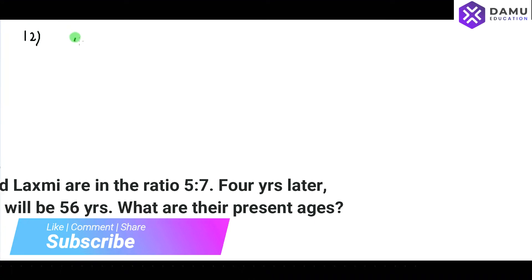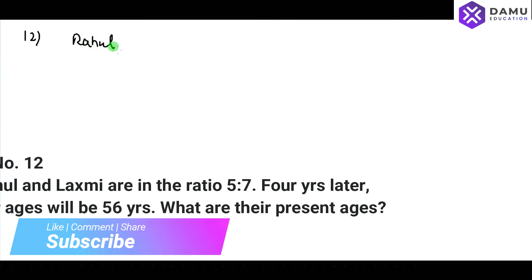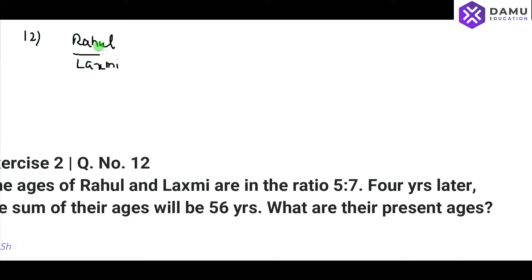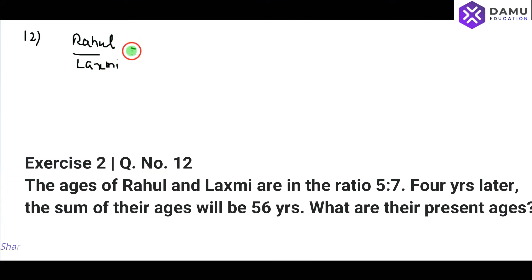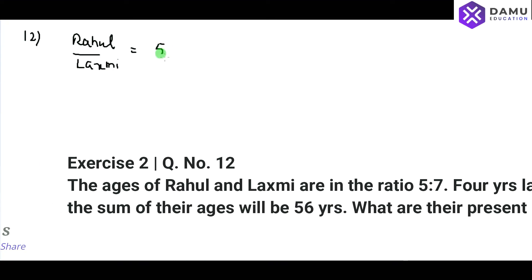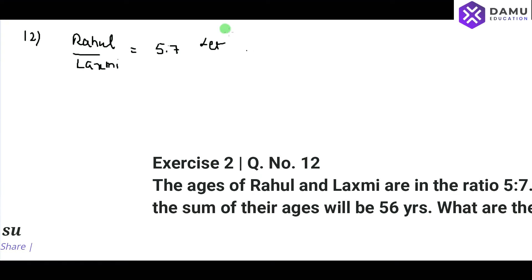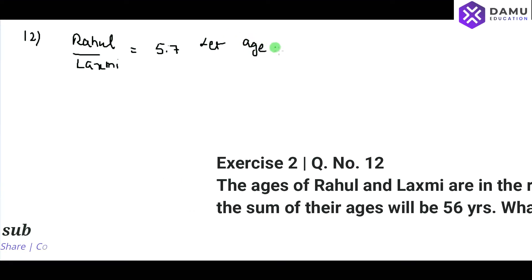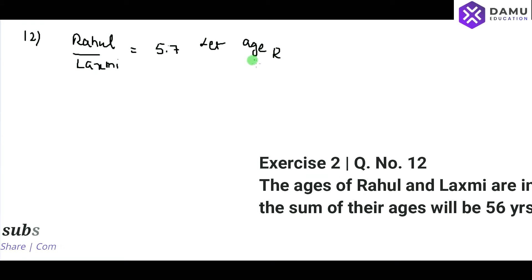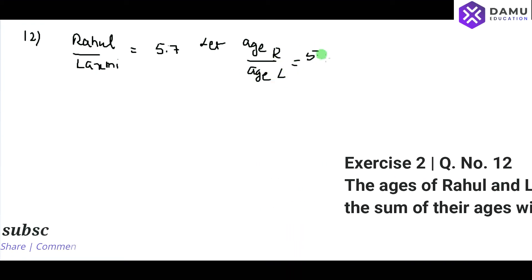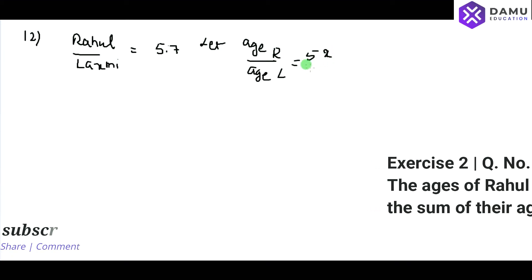So Rahul and Lakshmi's ages, they are given in the format of 5 is to 7. So let age of Rahul by age of Lakshmi be 5x by 7x.